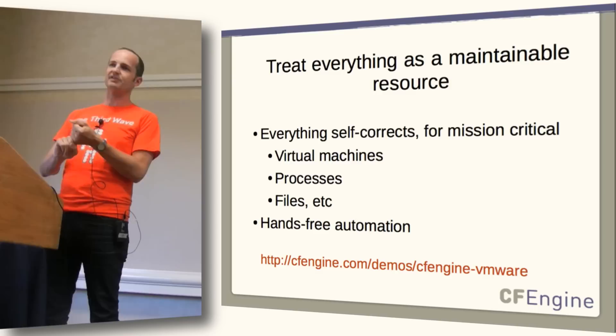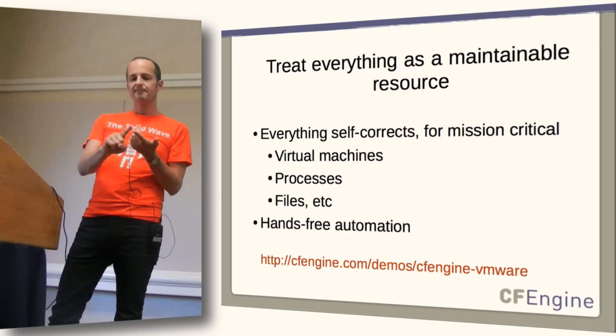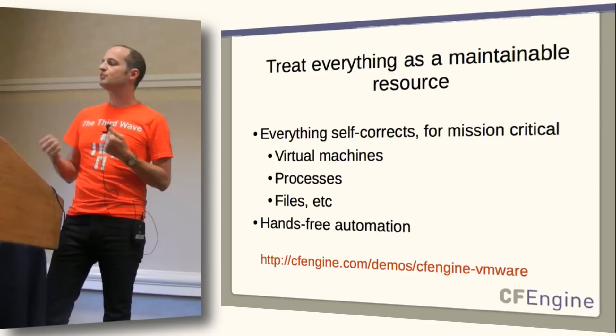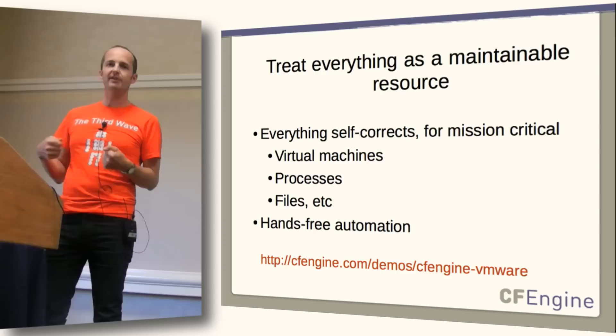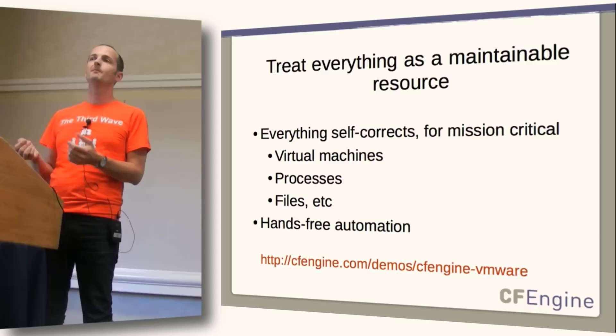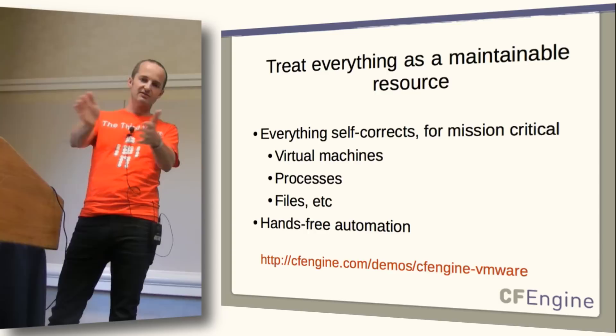In configuration management, we divide the system up into resources — files, processes, commands, scheduled jobs, storage devices, virtual machines. Different kinds of resources on which we depend. Each one in CF Engine is managed as an independent resource: a self-healing, self-correcting, self-maintaining resource that can detect deviations from a desired state and repair itself. And then it's hands-free. Human beings don't even have to get involved. Once they've said what the desired state is, that state will be maintained — like the autopilot on a 747: if it drifts off course, it'll bring itself back on course.